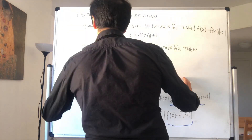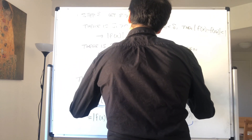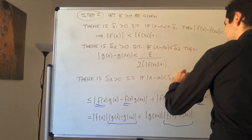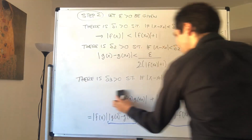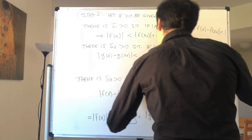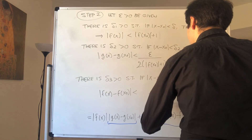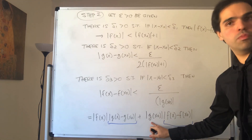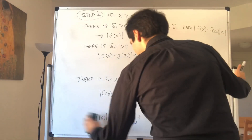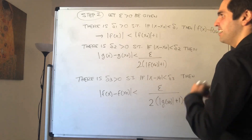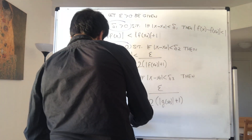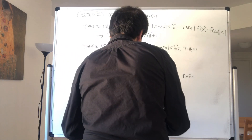We divide by two because we have two terms. And lastly there is δ₃ such that if |x - x₀| < δ₃ then |f(x) - f(x₀)| < epsilon over (2·(|g(x₀)| + 1)) — we add one to avoid division by zero. Then we choose delta to be the minimum of δ₁, δ₂, and δ₃.